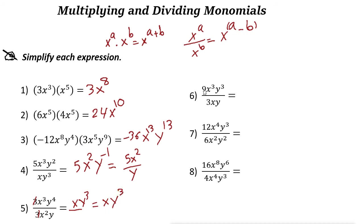Next example: 9 divided by 3 is 3. X cubed over x gives 3 minus 1 equals 2, so x squared. Then y cubed over y: y is to the power of 1, so 3 minus 1 is 2, giving y to the power of 2. Next, 12 divided by 6 is 2.